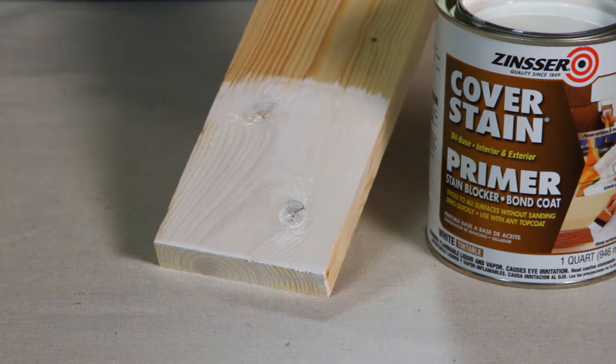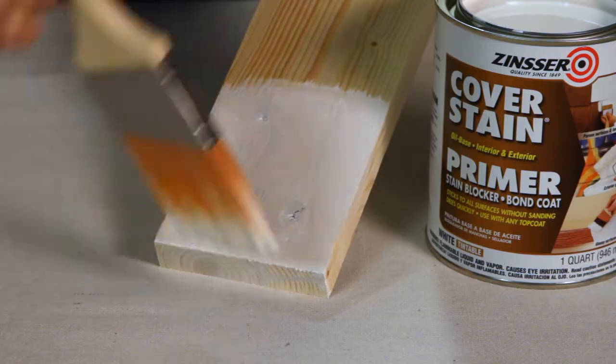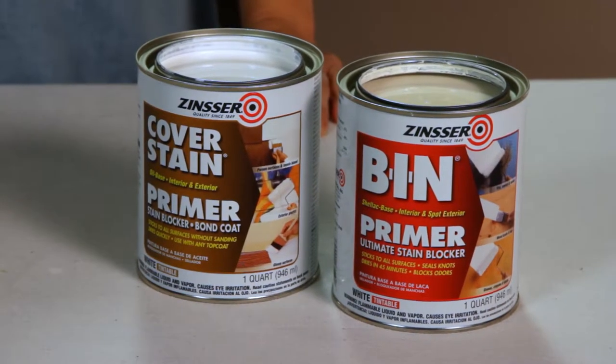Priming is not required for most projects, but to prevent bleed through of certain types of woods, just add one light coat of Cover Stain or BIN primer to the wood.